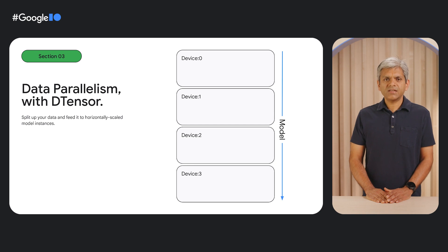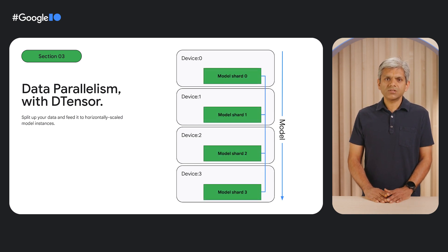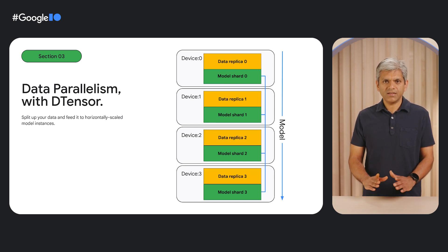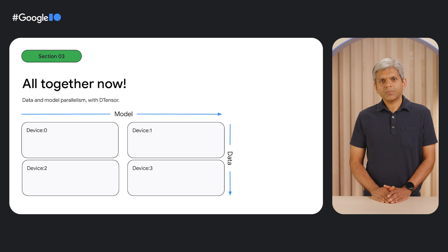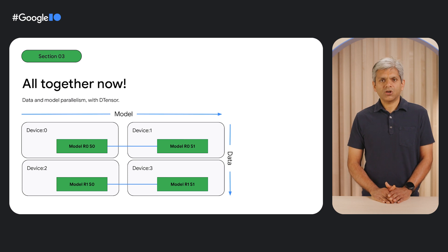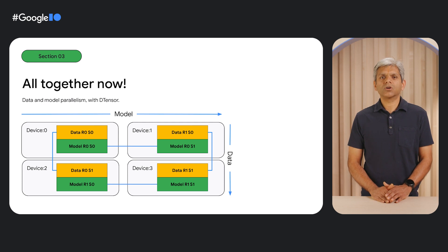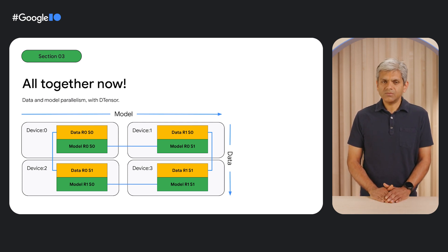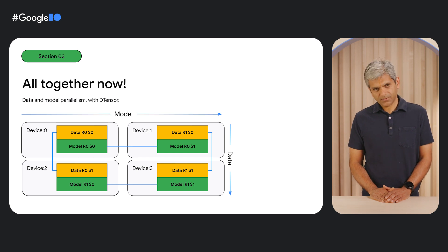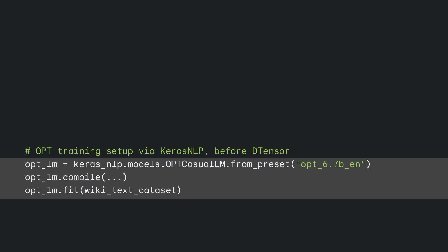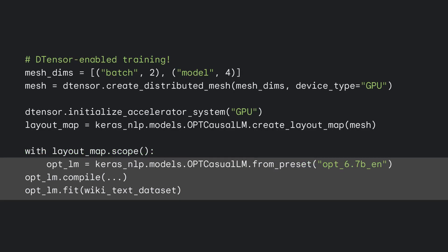But it doesn't just end there. D-Tensor also enables model parallelism, which looks like sharding the model itself across multiple devices and feeding in full copies of your data to each shard. Here's what makes D-Tensor really special: with D-Tensor, you can parallelize your data and your model all in one place. The principles behind sharding your model or your data all still work exactly the same way and come together seamlessly under one roof. All you have to do is add just a few lines to set up an appropriate config and initialize the D-Tensor context. That's it.